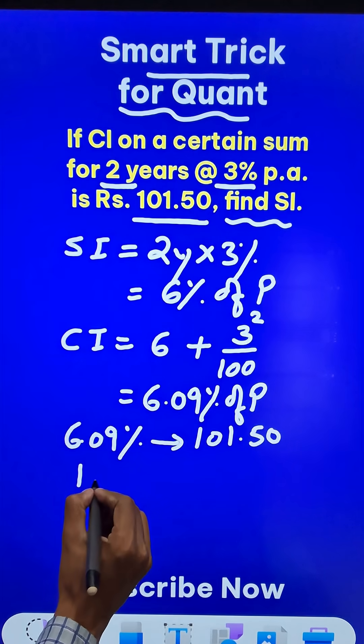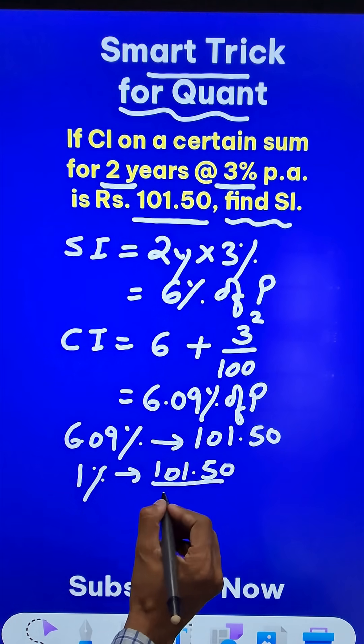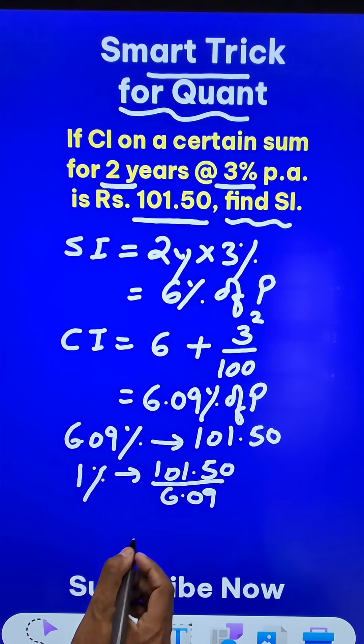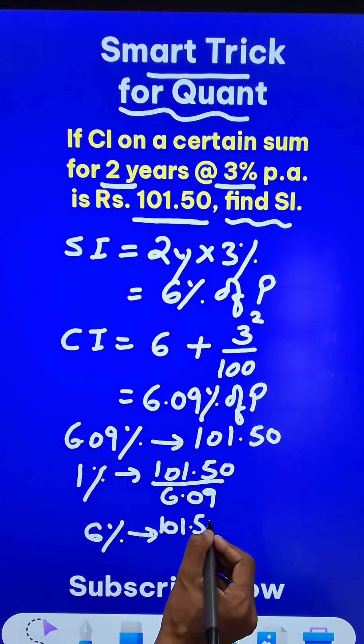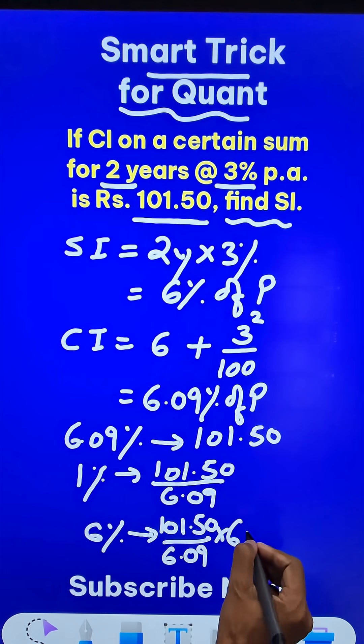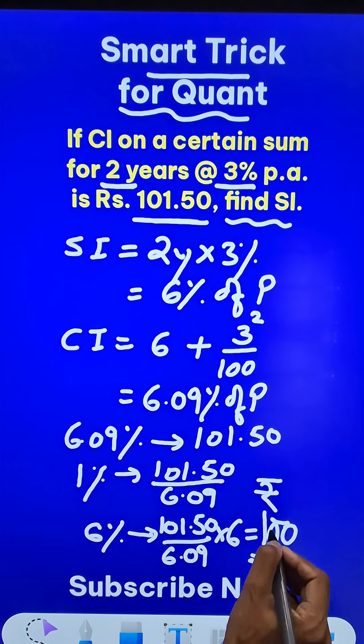So 1% will give you 101.50 upon 6.09, and finally 6%, that will be your answer: 101.50 upon 6.09 and multiply that by 6. And you will find that the answer for the question is exactly rupees 100.